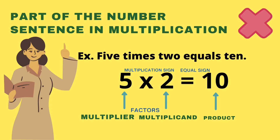Let us study the parts of a number sentence in multiplication. Five times two equals ten. Five is the multiplier, two is the multiplicand, and the product is ten. Five and two are also called factors. Five times two means two plus two plus two plus two plus two — there are five twos to add repeatedly, which equals ten.